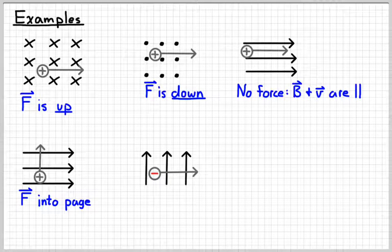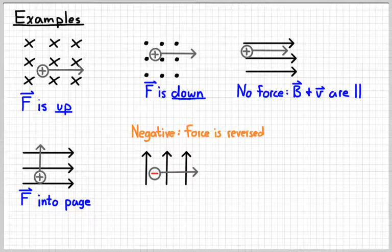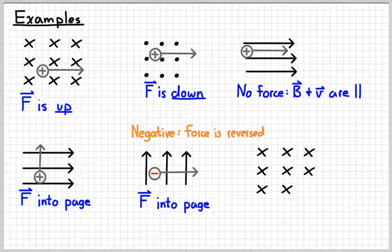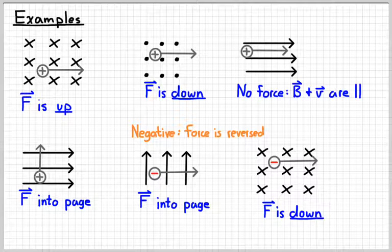In this example, we've got a magnetic field going upwards and a negative charge moving to the right. Point your thumb to the right, pointer finger upwards — your middle finger should extend out of the page. However, since it is a negative charge, we do the opposite. So if the right-hand rule tells us the force is out of the page, then for a negative charge the force would be into the page. Looking at another example: magnetic field going into the page, charge moving to the right — thumb to the right, pointer finger into the page, middle finger points up. But because it's a negative charge, the force is actually going down.